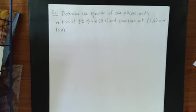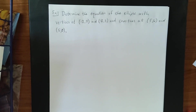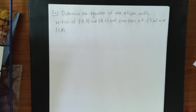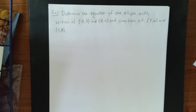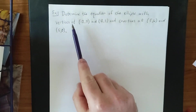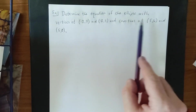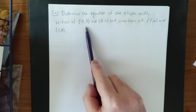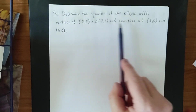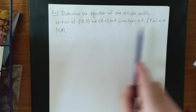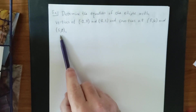Next up, we're going to be taking a look at finding equations of ellipses if we know certain graphical aspects of the ellipse. In our first example, a little more basic than our second one, we're going to determine the equation of the ellipse with vertices at negative 2, 3 and 12, 3, and co-vertices at 5, 6 and 5, 0.